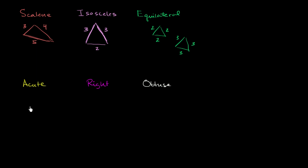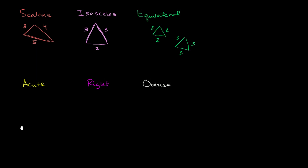Now we're going to classify based on angles. An acute triangle is a triangle where all of the angles are less than 90 degrees. So for example, a triangle where one angle is 60 degrees, another is 59 degrees, and the third is 61 degrees — notice they all add up to 180 degrees. This would be an acute triangle, since all of the angles are less than 90 degrees.